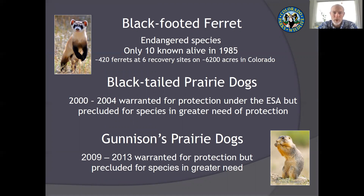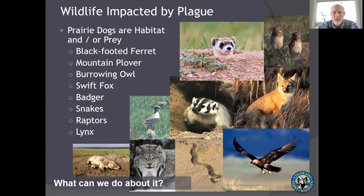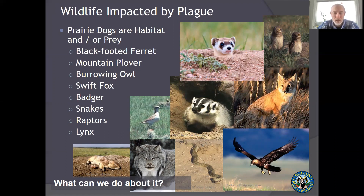Specifically, we're working to recover the endangered black-footed ferret back into Colorado. We have huge swaths of black-tailed prairie dog habitat that have been warranted for protection under the ESA, and Gunnison prairie dogs in the southwest part of the state have been warranted for protection as well. As a wildlife management agency, one of our major goals is to keep these species on the landscape. But plague is a real ecosystem disease — any number of species are impacted because their main food source or habitat are prairie dogs and prairie dog burrows.